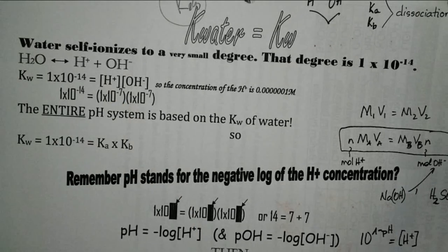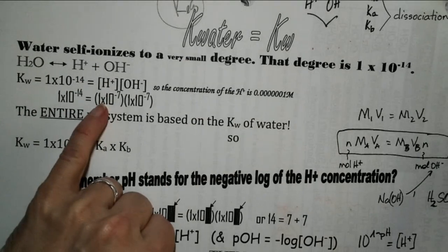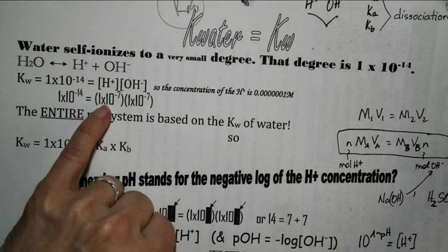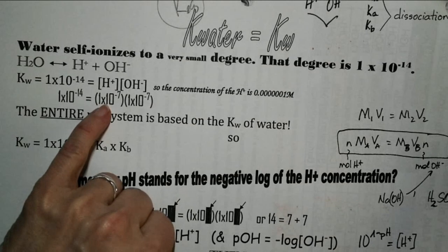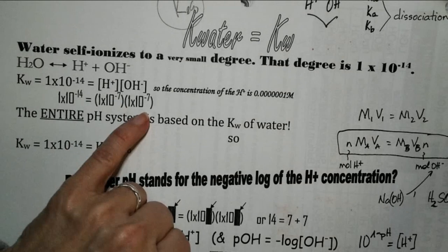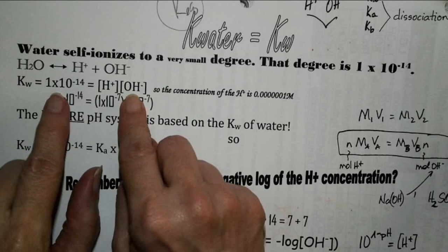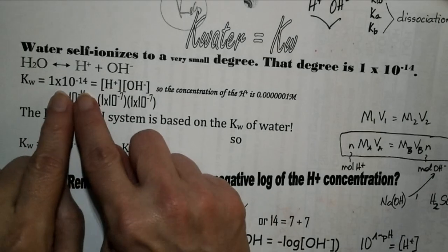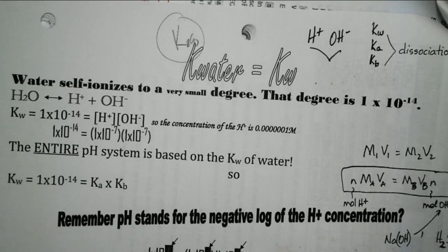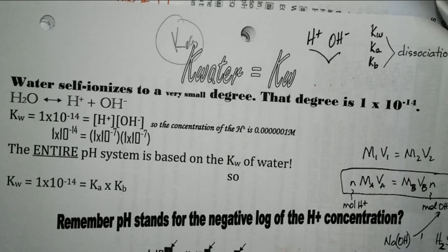With water, if you have 1×10⁻⁷ molar of the water that's going to be ionized, that's true for the hydrogen ions and the same thing for the hydroxide ions — it's a constant. When you multiply those two together, you get the water constant. For distilled water at 25°C, Kw is 1×10⁻¹⁴. That's what we base our whole pH scale on.